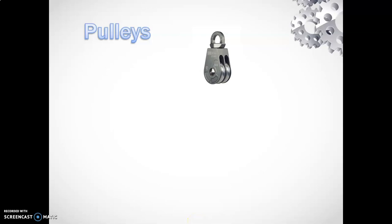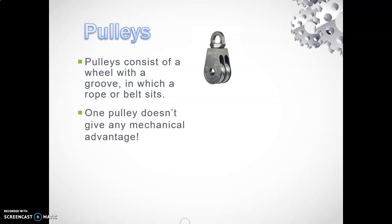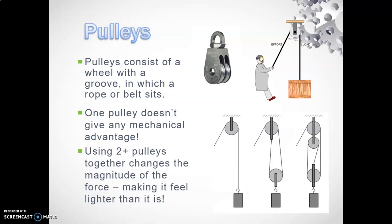Now let's talk about pulleys. Pulleys consist of a wheel which has a groove that a belt or rope sits inside so it's not going to move up the sides. One pulley doesn't give you any mechanical advantage - it's not really going to help you, you might as well just lift it yourself. But we can combine pulleys in a system of two, three, or more, and that changes the magnitude of the force, making whatever you're trying to lift feel a lot lighter.